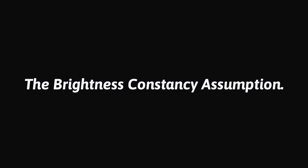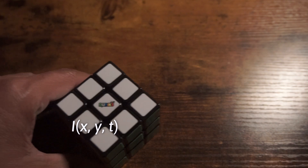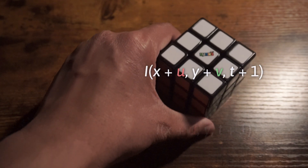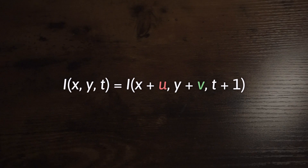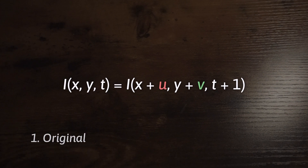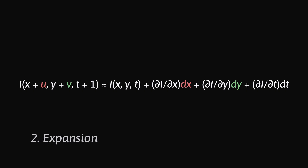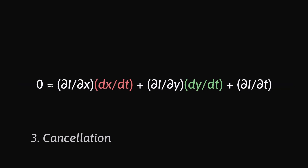We're going to get started with the brightness constancy assumption. The brightness constancy assumption assumes that a moving object's brightness stays constant as it moves. So if we have a white cube and move it to the right and up, this cube would stay white as it was before. This equation is non-linear because it tells us that the pixel at x and y equals the pixel at x plus u and y plus v. We use the Taylor series expansion to linearize this equation into derivatives. Linearizing turns this non-linear equation into a linear one, allowing us to find the rate of change from x, y to x plus u, y plus v.